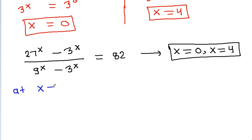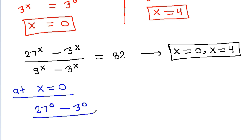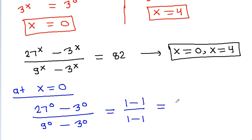At x = 0: the expression becomes (27^0 - 3^0) / (9^0 - 3^0) = (1 - 1) / (1 - 1) = 0/0, which is an indeterminate form. So x = 0 is not a valid solution.